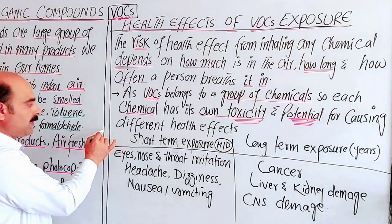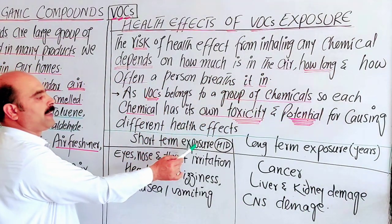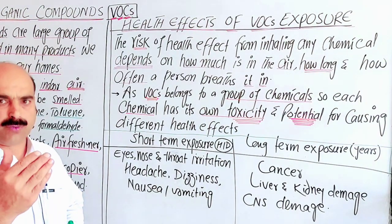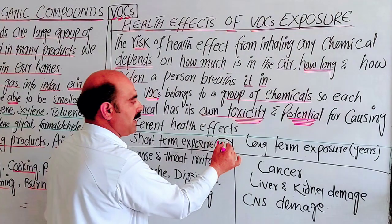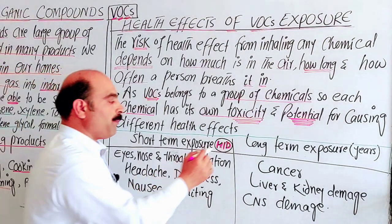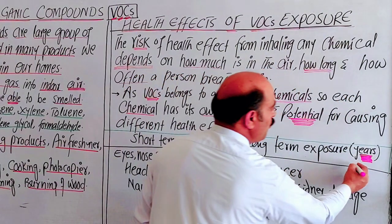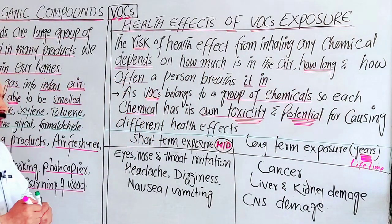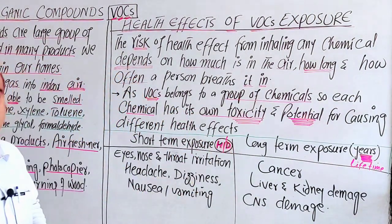Health effects are categorized into two types: short-term and long-term. Short-term exposure means exposure for hours or a day. Long-term exposure means prolonged or lifetime exposure — mustaqil, meaning permanent — over years of being exposed to these compounds.